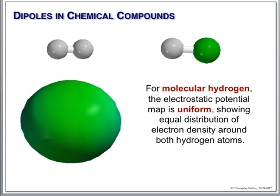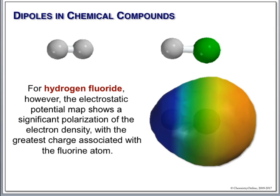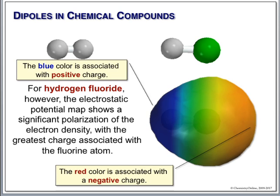Now let's contrast this with hydrogen fluoride. These are different atoms. When we calculate the electrostatic potential map for hydrogen fluoride, it turns out to be much, much different. Blue represents a deficiency of electrons, and red represents lots of electrons. What's happening is that in this covalent bond, the fluorine is sucking all the electrons away from the hydrogen towards itself. So it's not sharing very well — not like hydrogen did.